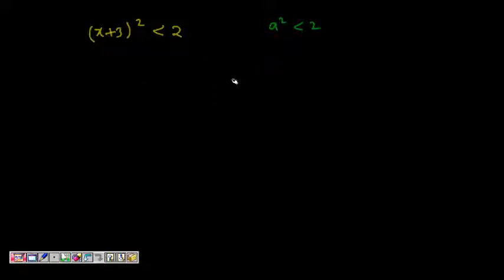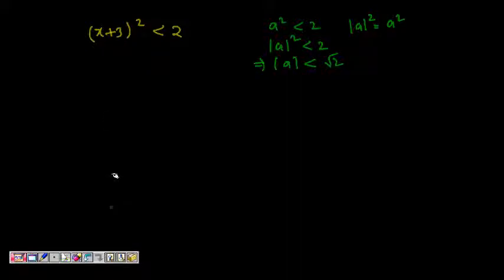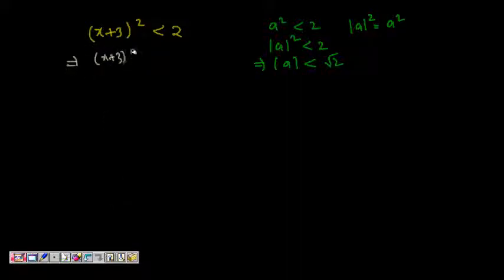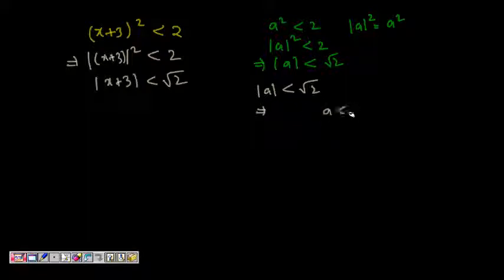We know that mod of a whole square equals a squared, so a squared less than 2 can be written as mod a squared less than 2. Since both sides are positive, we can take the square root: mod a is less than root 2. This implies mod of x plus 3 is less than root 2, so x plus 3 lies between minus root 2 and root 2.